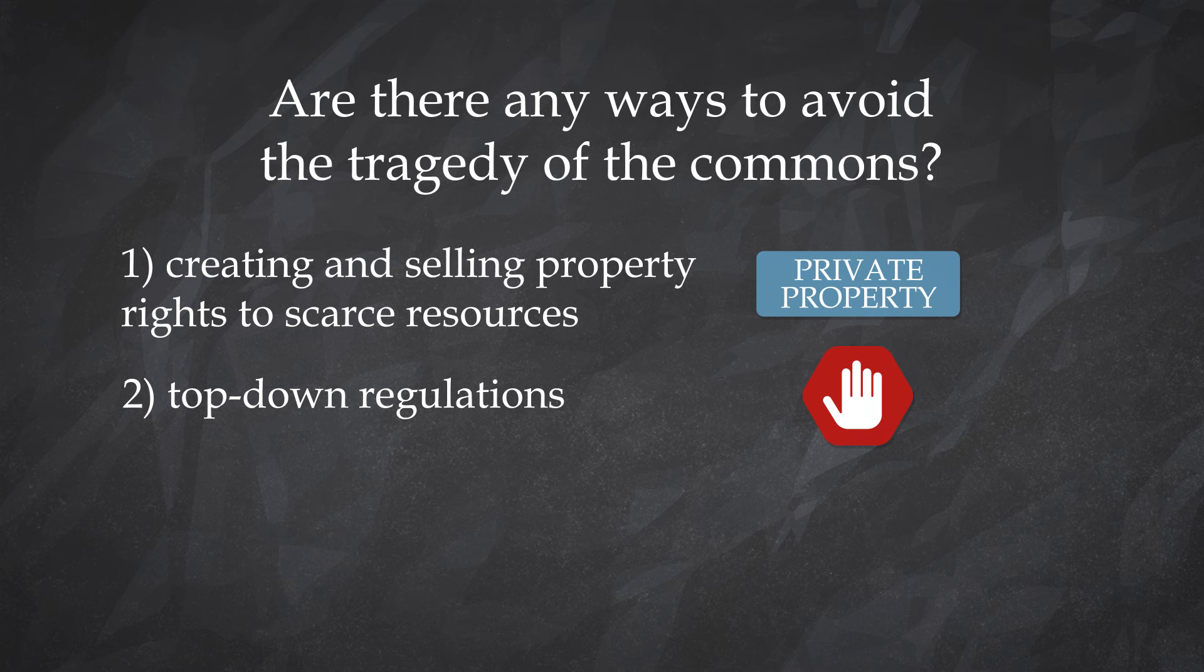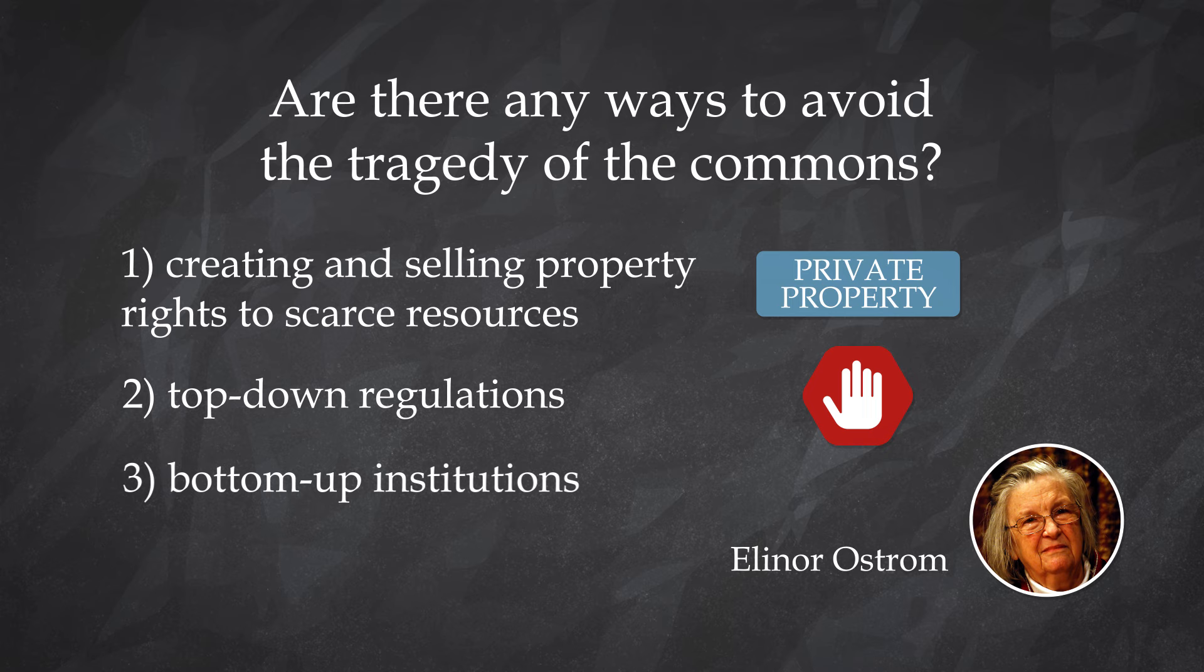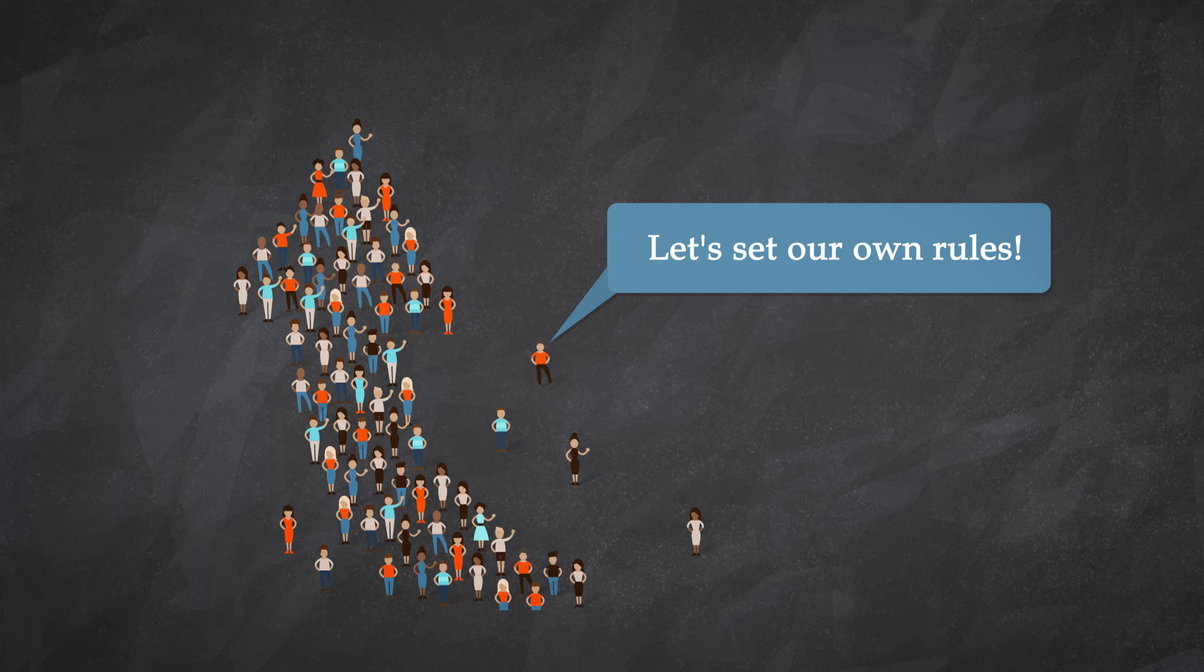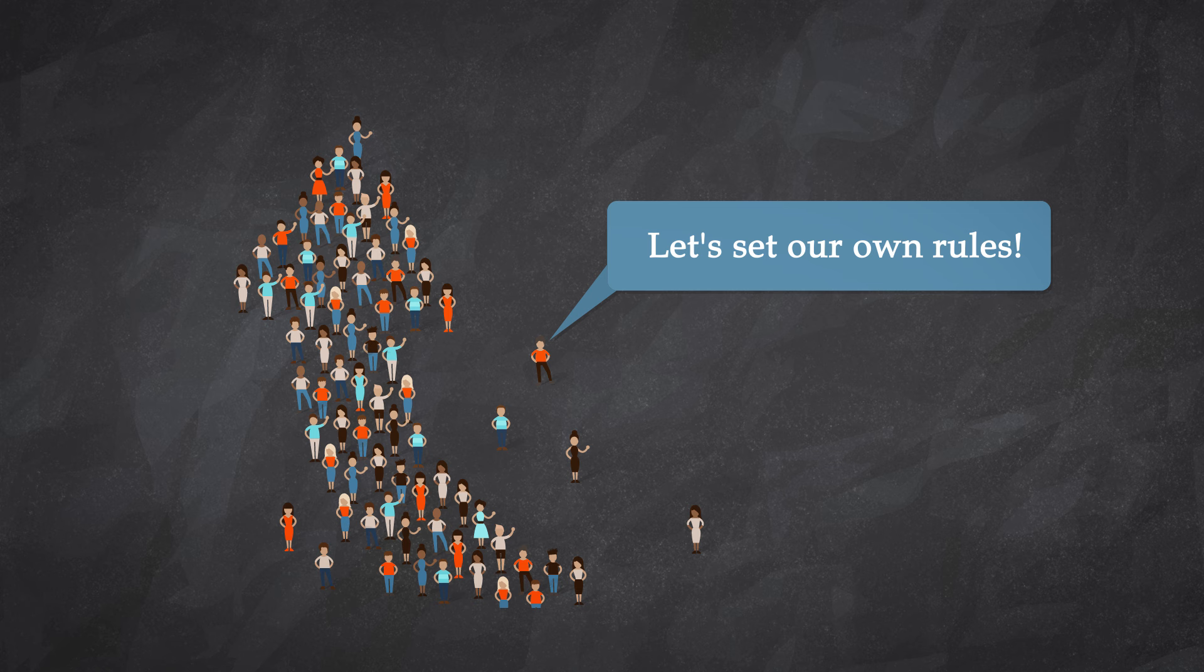Later research by Nobel laureate Eleanor Ostrom, among others, has shown, however, that there is one more group of solutions, namely 3. Bottom-up institutions. There are some examples that show under the right conditions, some communities were able to establish rules that allowed for a long-term and sustainable use of shared resources.